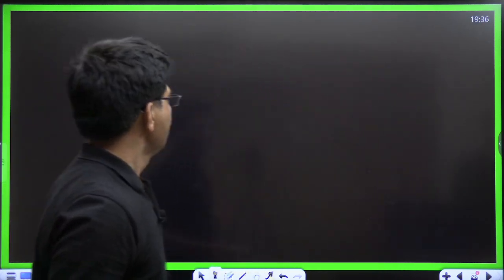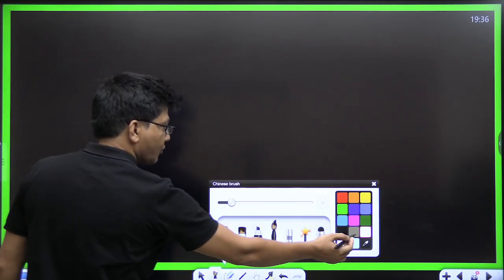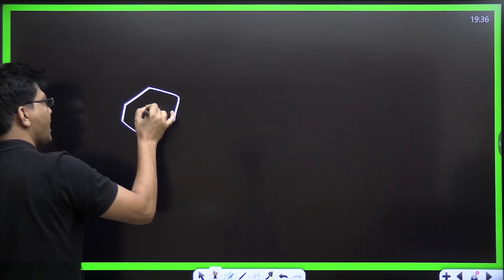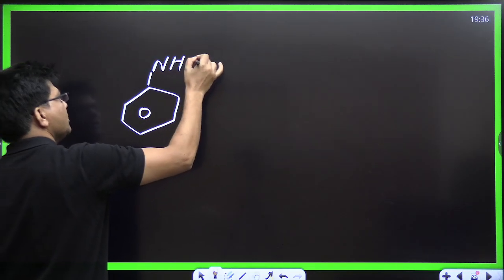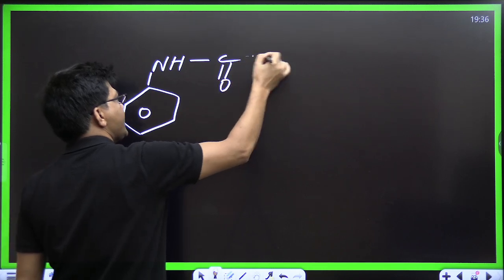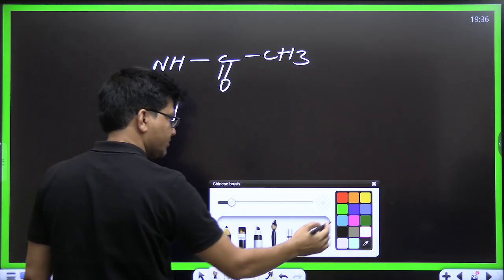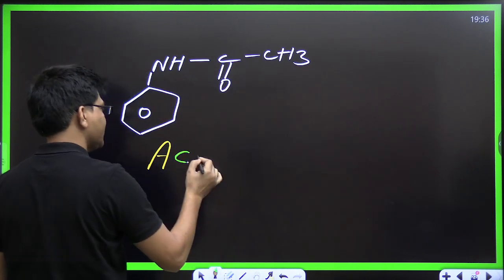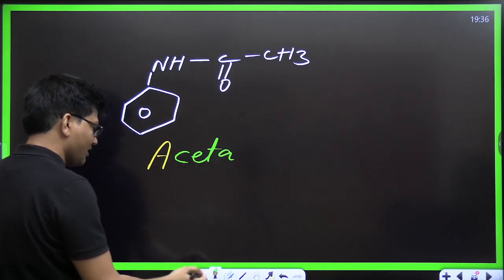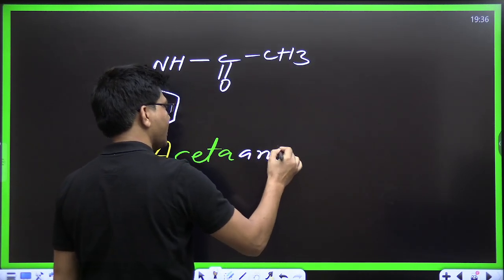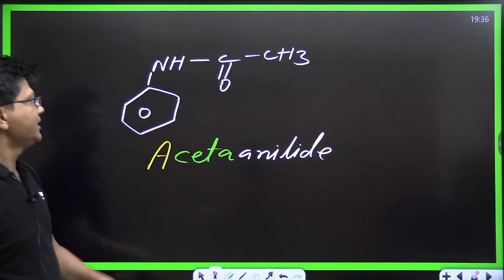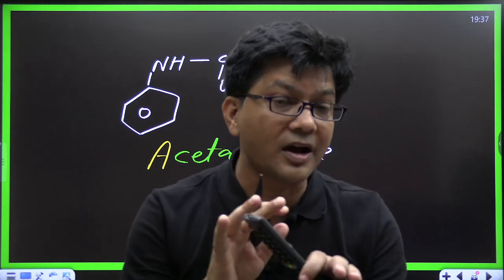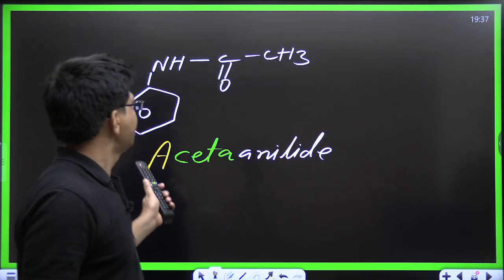Let me write down one more compound that is really, really important — without it, the examination can't even start. The structure is NH-CO-CH3. Its name is acetanilide. This is the trivial name and you must keep it in your brain; otherwise you cannot pass the examination.